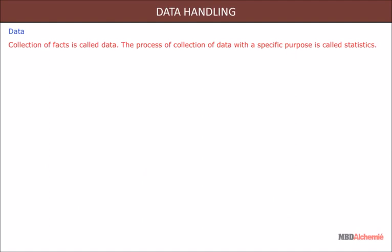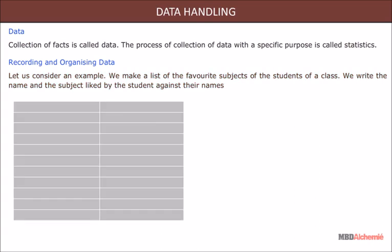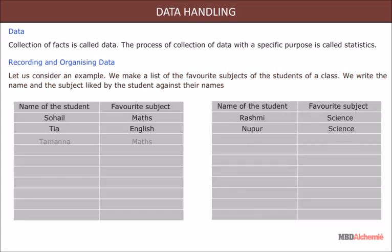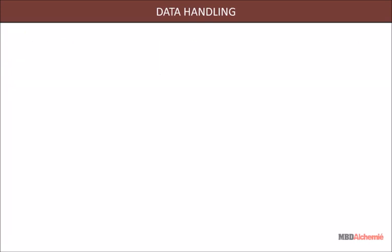The process of collection of data with a specific purpose is called statistics. Recording and organizing data: Let us consider an example. We make a list of the favorite subjects of the students of a class. We write the name and the subject liked by the student against their names as shown below.